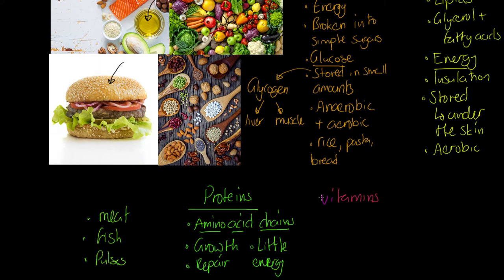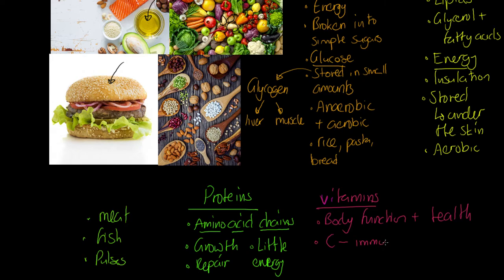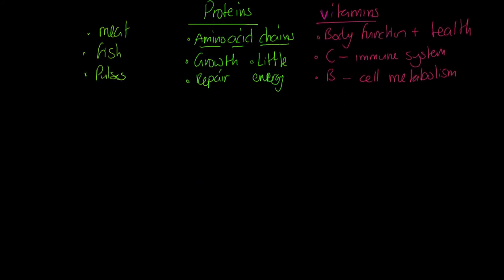Now let's cover vitamins. Vitamins are really essential for body function and health. Focusing on a couple of key examples: vitamin C, which we get from certain fruits — particularly citrus fruits — really helps with the immune system. The whole range of B vitamins, and there are lots of them, help with what we describe as cell metabolism — the chemical processes within cells. Vitamins are important for varied processes in the body, and we get them largely from vegetables.